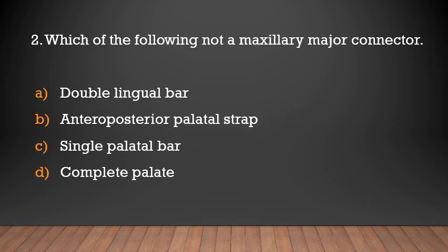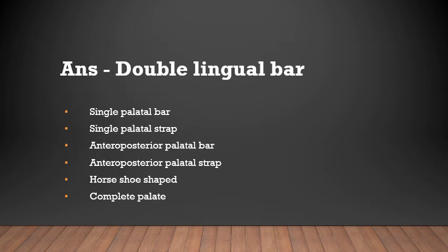Which of the following is NOT a maxillary major connector? Options: double lingual bar, anterior-to-posterior palatal strap, single palatal bar, complete palate. The answer is double lingual bar. Maxillary major connectors are: single palatal bar, single palatal strap, anterior-to-posterior palatal bar, anterior-to-posterior palatal strap, horseshoe shape, and complete palate.